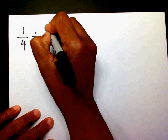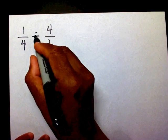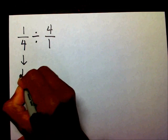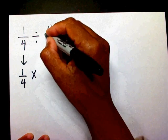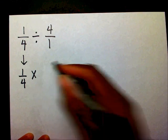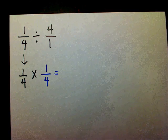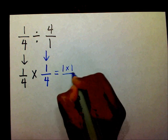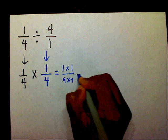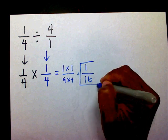Let's say I had one-fourth divided by four over one. Again, I want to just write my first fraction down, I want to change my division to multiplication, and then I want to take the reciprocal of four over one, which is one-fourth. Now I've created a multiplication problem, so I just need to multiply across: one times one is one, and four times four is sixteen.